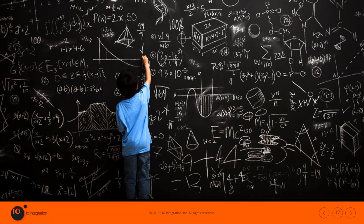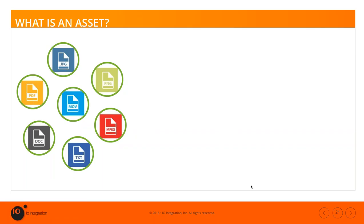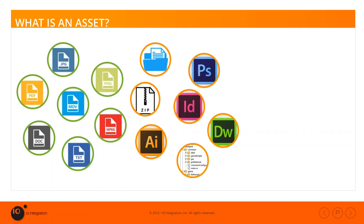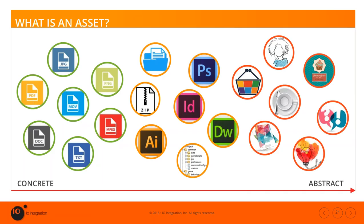Let's talk about digital file management as we know it. Up until now, when talking about assets, we've only been dealing with files and their associated metadata. So the question is: can an asset be more than a file? Does it have to be concrete at all, or could it be something abstract — like a person, an advertisement, an idea, or nothing?